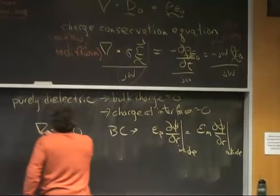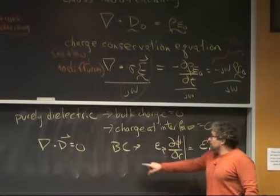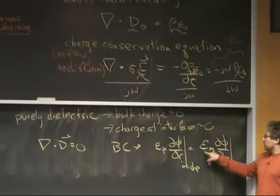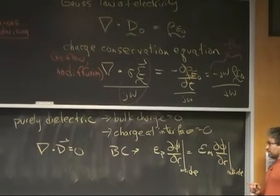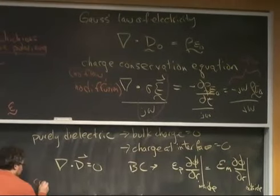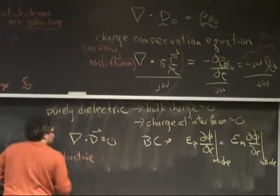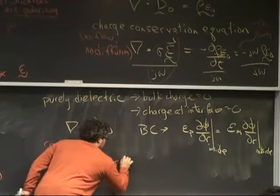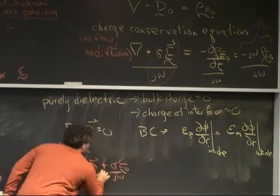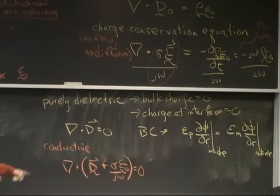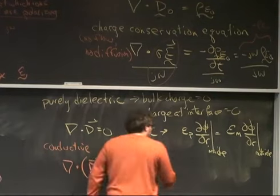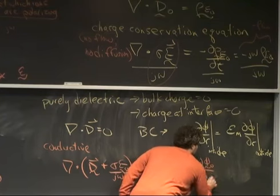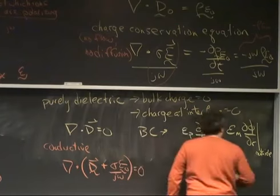So for purely dielectric, I solved del dot D is equal to zero. This is basically Laplace's equation. I applied the boundary condition that epsilon times the electric field normal to the surface on the inside was equal to epsilon m times the electric field normal to the surface on the outside. If it's conductive, I solve this equation. And my boundary condition looks like this.